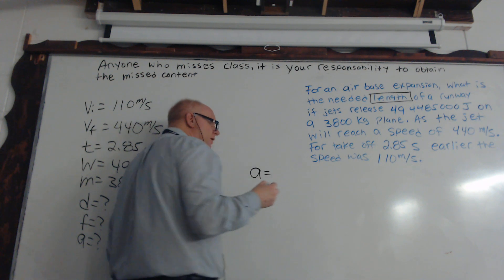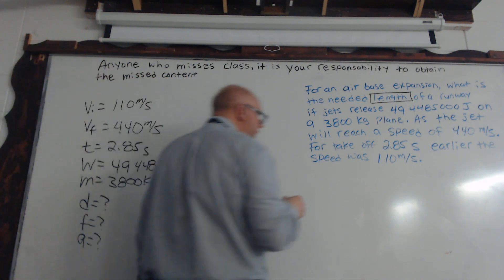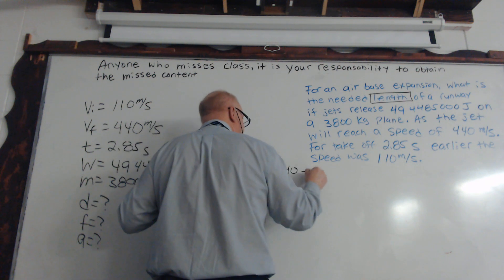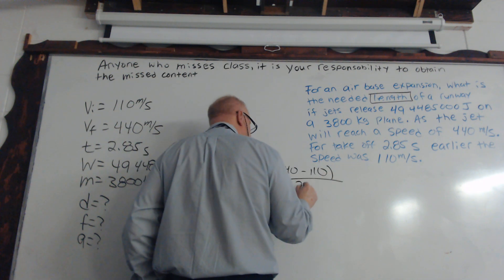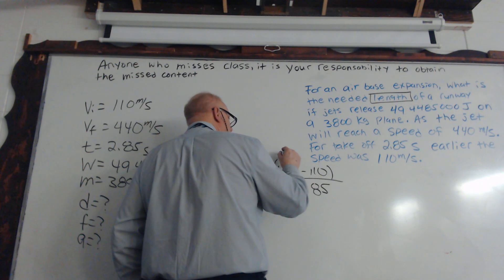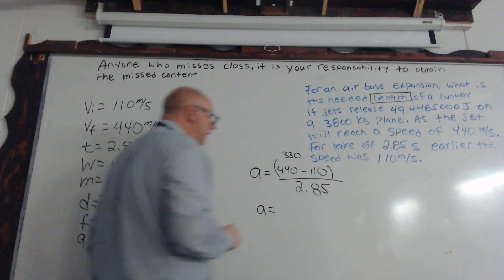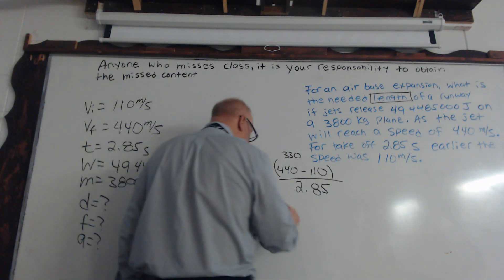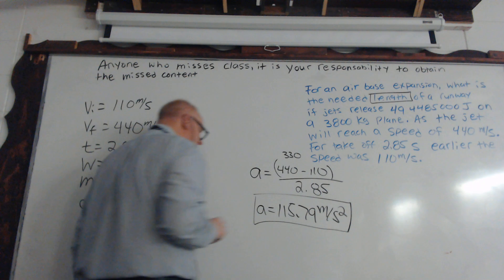What does the formula tell you to do? To find your two fractional velocities at the top of your fraction, which is 440 minus 110, and then time goes underneath that. So 330, I think. So 330 divided by 2.85 equals 115.79 meters per second squared. So we have our acceleration.